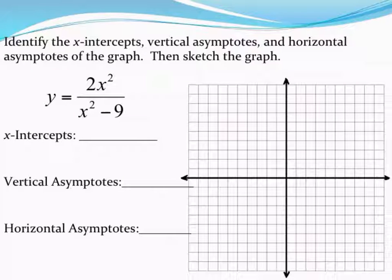The first thing I like to find when I'm graphing one of these rational functions is the x-intercepts. The x-intercepts are whatever would make the numerator of my fraction equal to 0. So I'm going to set the top equal to 0 and then solve.